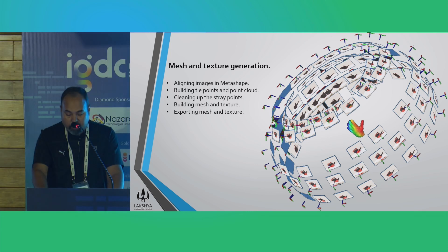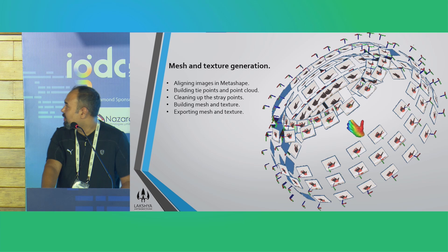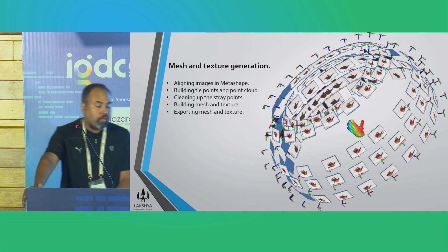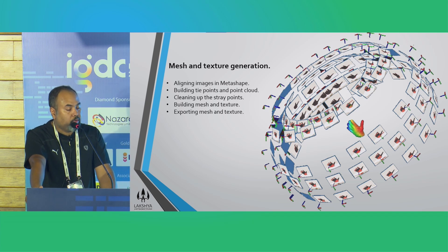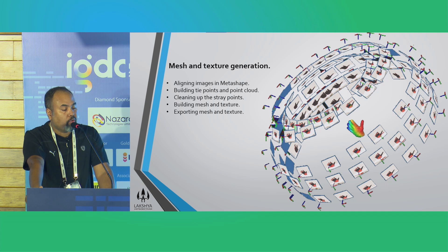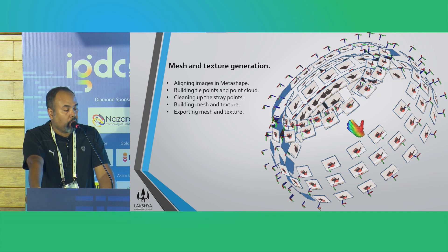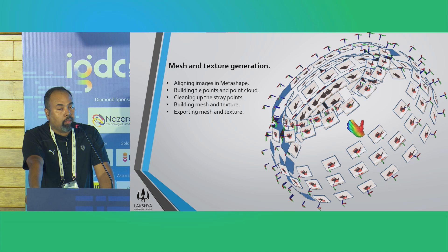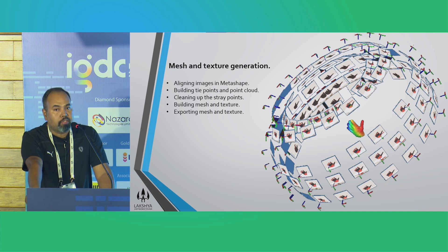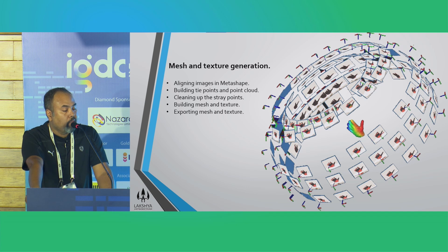I have taken the images inside of Metashape. What I am going to do is align the images inside of it. I will build tie points, and based on the tie points I will generate a point cloud. After we create point clouds we will inspect them and clean up the stray points. Having created masks will benefit us here — the stray points will be minimal. Once we are satisfied, we will build mesh and thereafter textures.